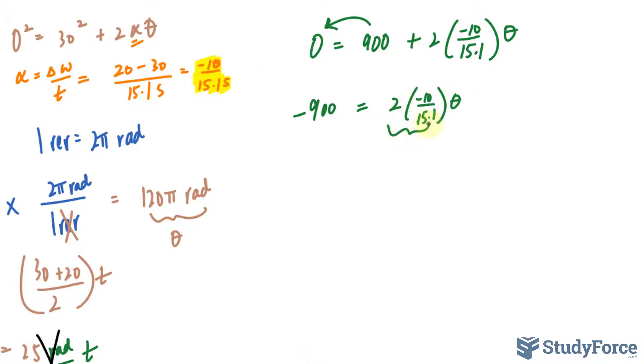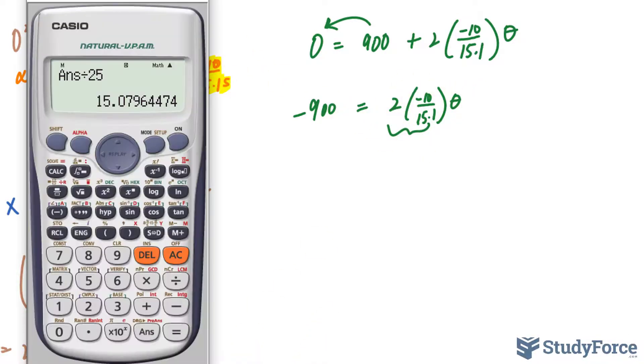I'll multiply these two out and then divide both sides by whatever I get. So 2 times negative 10 over 15.1. That should give us negative 1.3245. Then I'll divide both sides by that.